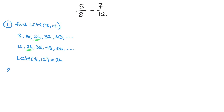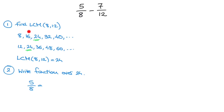We now move on to step 2, and that's to write both of these fractions over 24. So I'll just go ahead and say: write fractions over 24. I'll start with 5 over 8. We can write this as a fraction over 24 by noticing that 24 is the 3rd multiple of 8. So on the denominator it's 8 times 3, and I need to do the same on the numerator: 5 times 3. That is equal to 15 over 24.